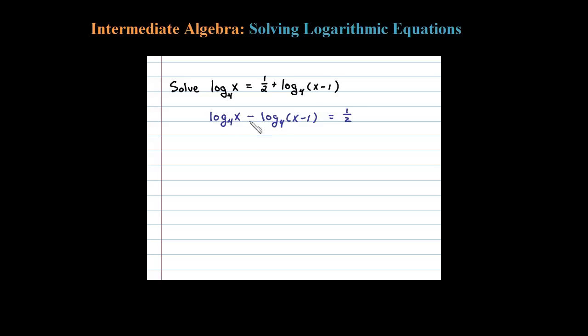base 4 of x divided by x minus 1, and that's supposed to be equal to 1/2. So now once I have the log isolated, I can convert it back to an exponential using the definition.